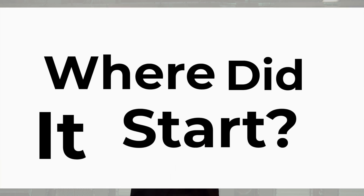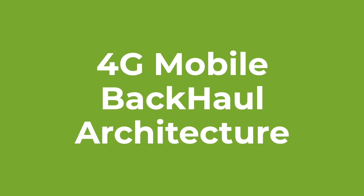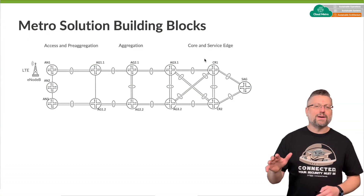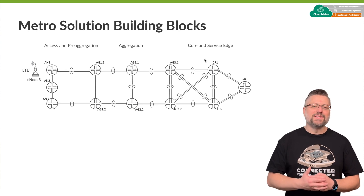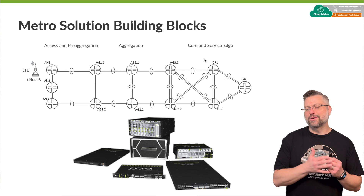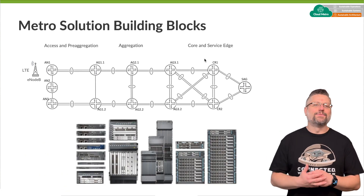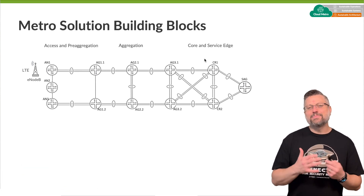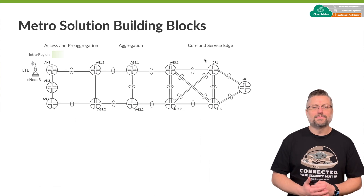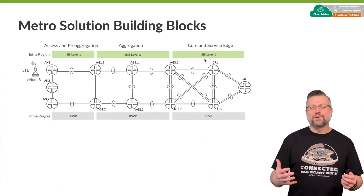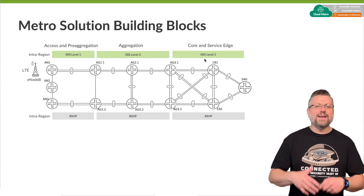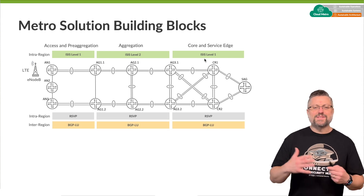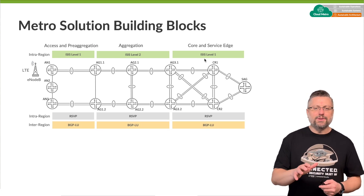JVD is very much a reflection of this journey that our customers are on. We started a few years back with a 4G mobile backhaul reference architecture. First we built the physical infrastructure, consisting of ACX for access and pre-aggregation, MX for aggregation and services edge, and PTX for the core. Then we built out the underlay.